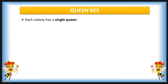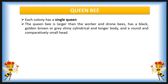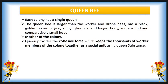First we discuss the queen bee. Each colony has a single queen, irrespective of the colony size. The queen bee is larger than the worker bee and drone bee, with a black, golden, brown and grey shiny cylindrical abdomen, a longer body, and a round comparatively small head. She is the only perfectly developed female and is the mother of the colony. The queen provides a cohesive force which keeps the thousands of worker members of the colony together as a social unit using a queen substance.